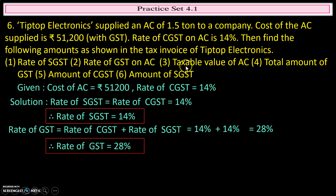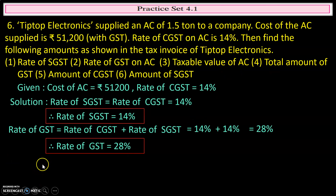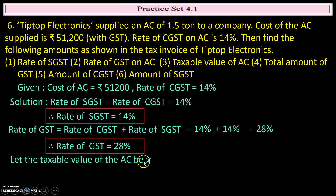The next quantity we have to find is the taxable value. Now, the amount given is with tax — taxable value means the amount without the tax. Since we do not know the taxable value, we will consider it to be x. Let the taxable value of the AC be x.